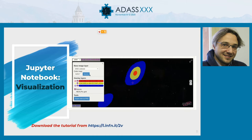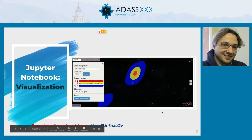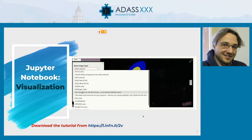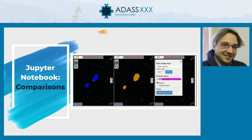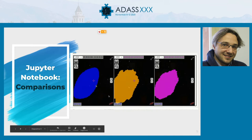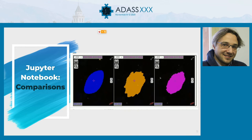You can also interactively visualize sky localizations at different confidence levels in Jupyter, as shown in the demo. The tutorials can be downloaded and run from the link reported in the slides. You can also interactively compare different sky maps issued for the same event — for example, the sky localization of GW190814: the initial BAYESTAR sky map, the initial LALInference, and the final sky map published a few months ago.